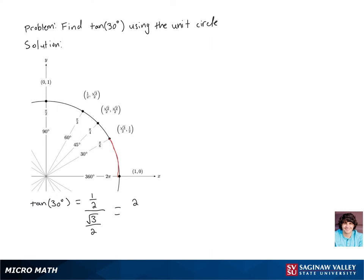So we're going to multiply 1 half by 2 over root 3, and we'll get 2 over 2 times root 3.